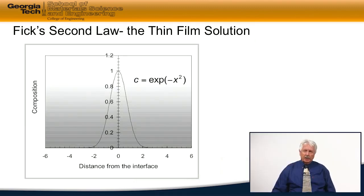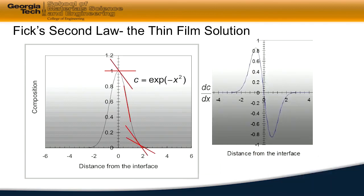So I'm going to take a simple exponential function, c is the exponential of minus x squared, and I have graphed that function. And then what I'm going to do is come along here and take local derivatives as indicated by those red lines. If I take each one of those points where I have taken the first derivative, I have the first derivative then plotted as a function of composition to the right. So I have the actual first derivative plotted next to the composition as a function of distance.